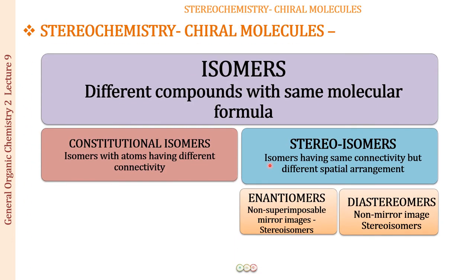Based on this, let me reclassify isomers. Isomers are different compounds with the same molecular formula. They are of two types: constitutional or structural isomers, and stereoisomers. Structural isomers have atoms with different connectivity — chain isomers, position isomers. Stereoisomers have the same molecular formula, the same structural formula, but a different spatial arrangement of atoms. Now, instead of conformational and configurational isomers, I am classifying stereoisomers into enantiomers and diastereomers.